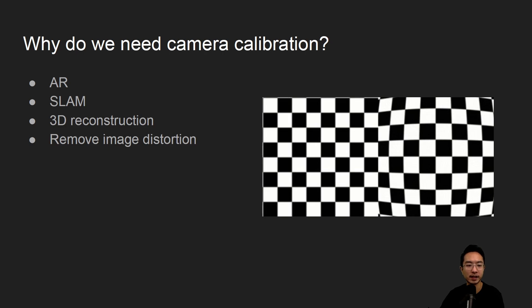So why do we need camera calibration? Camera calibration is typically useful for applications like AR, SLAM, 3D reconstruction, or simply for obtaining an undistorted image.